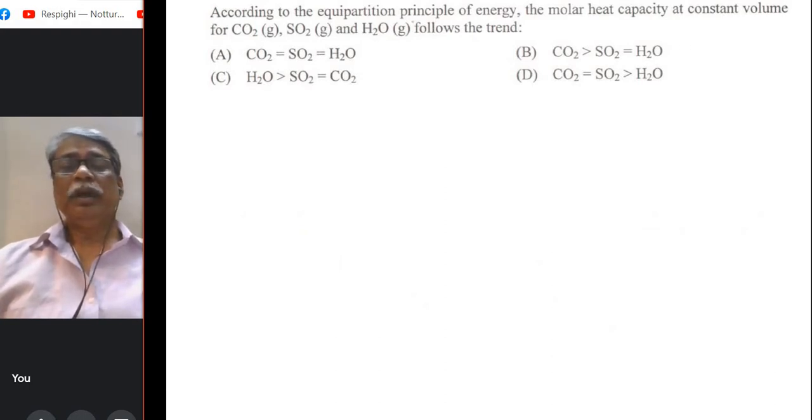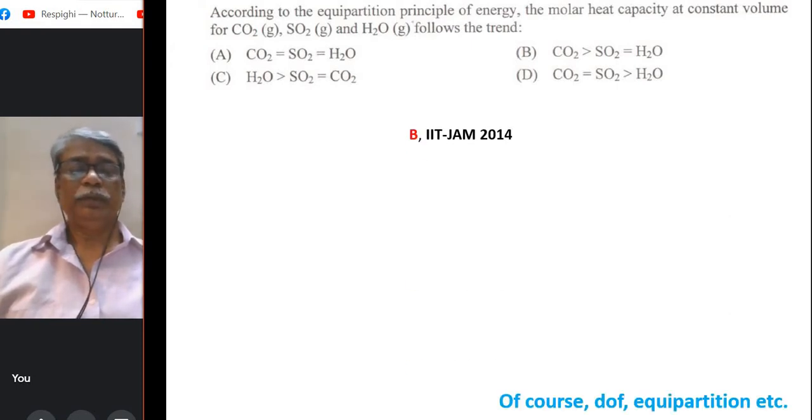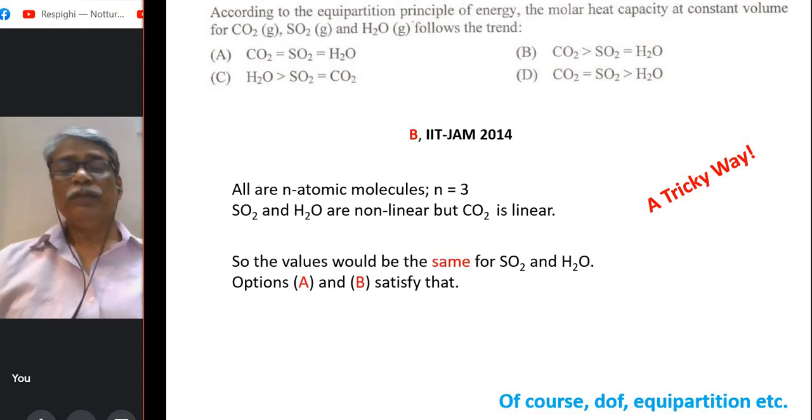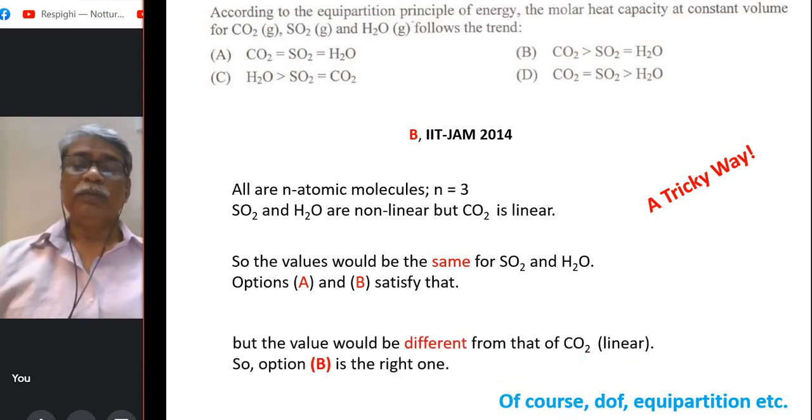Three molecules are there and according to the equipartition principle of energy, the C_V molar heat capacity at constant volume follows the trend, which one is correct. Of course, you can use your idea and knowledge of degrees of freedom and equipartition energy principle calculation, but there is a tricky way and that is simple that all 3 molecules are triatomic, n = 3, but SO₂ and H₂O are non-linear and CO₂ is linear. So the values of SO₂ and H₂O must be the same. A and B both satisfy that, but in A, CO₂ is also same, but that is not possible because CO₂ is a linear molecule. So that value would be different from the other two molecules. So only option B is the right.